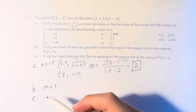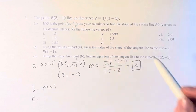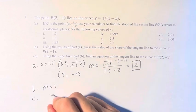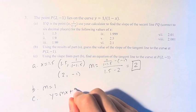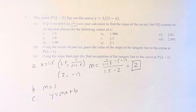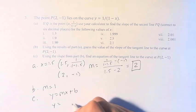And in part C, we're asked using the slope, find an equation of the tangent line to the curve at this point. So in standard slope-intercept form, M is 1, so this is y equals x plus b.